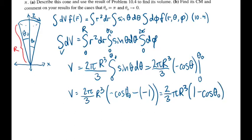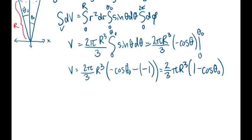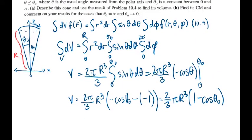Part B asks us to find the cone's center of mass and comment on our results for the cases that theta naught equals pi and theta naught approaches 0. For the center of mass of the cone, we can see by inspection, by picturing a cone centered about the z-axis, that the symmetry in the x and y directions means that the center of mass in x equals 0 and the center of mass in y equals 0.